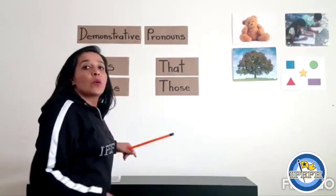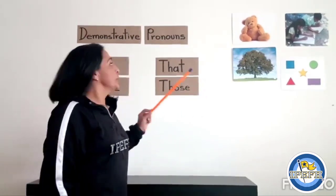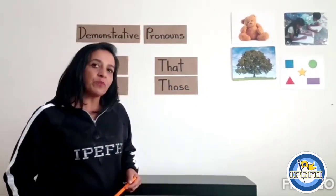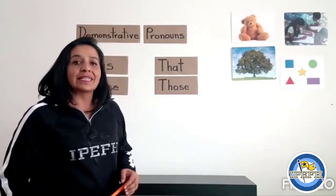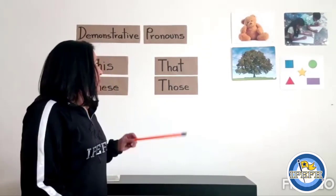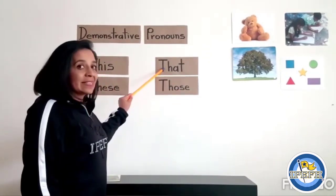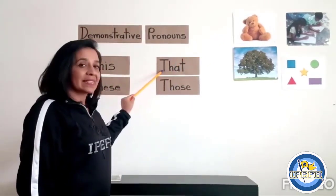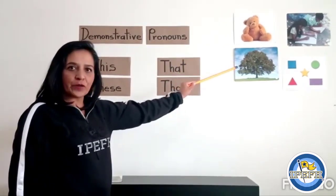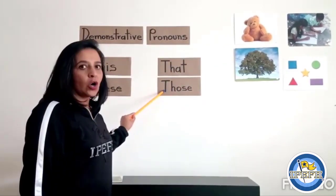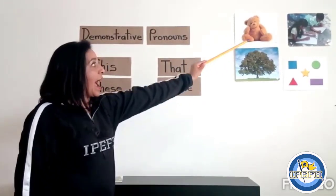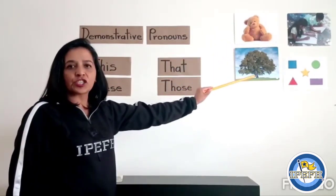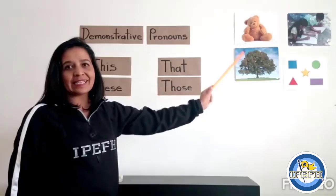Now we are going to use 'that' and 'those' to point things or people that are more distant to the speaker. For example: that is a teddy bear, that is a tree, those are children, those are shapes.